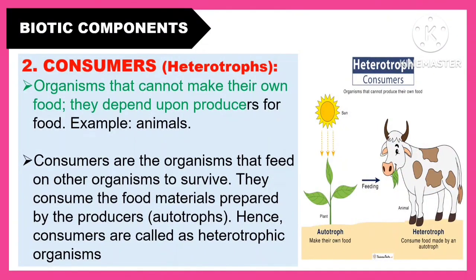Another biotic component is the consumers or the heterotrophs. These are the organisms that cannot make their own food. They depend upon producers for food. An example for that are animals. Consumers are the organisms that feed on other organisms to survive. They consume the food materials prepared by the producers or the autotrophs. Hence, consumers are called heterotrophic organisms.